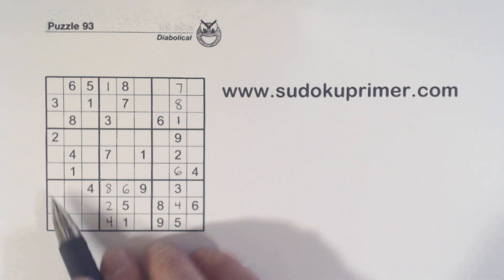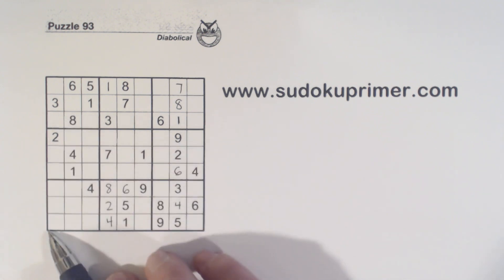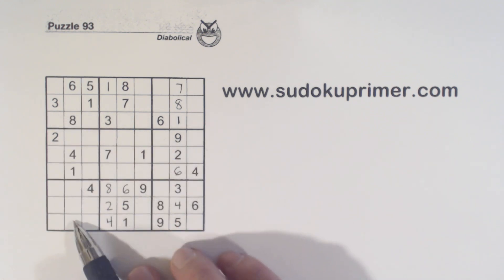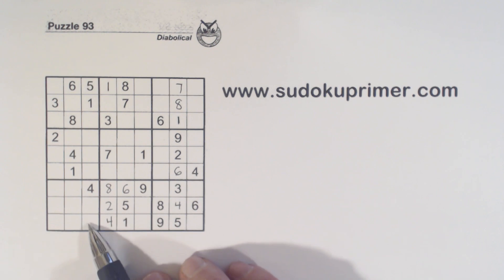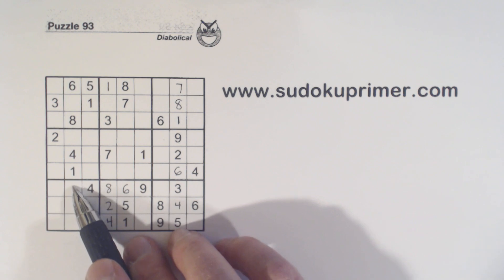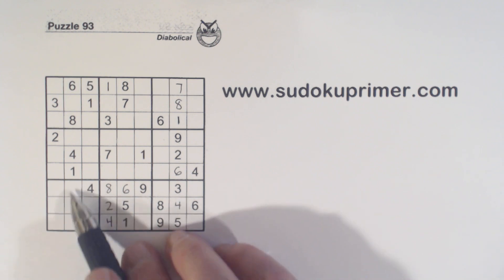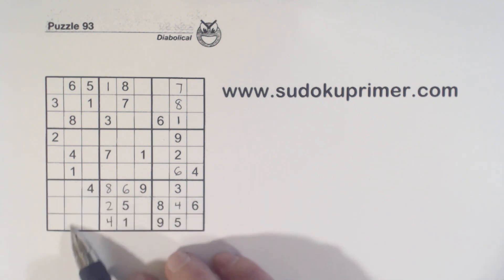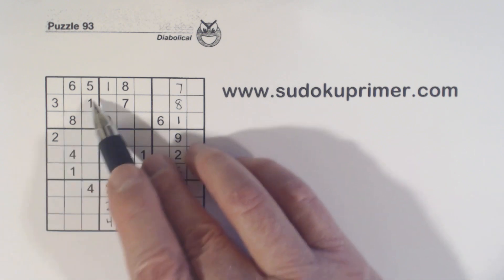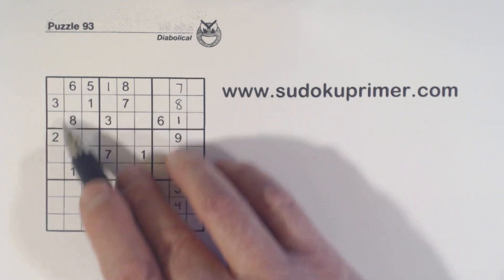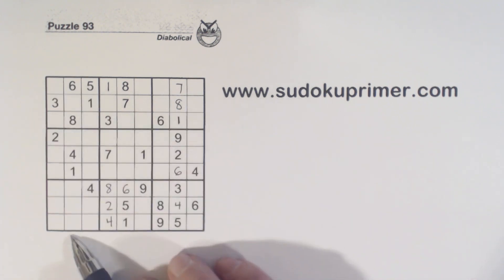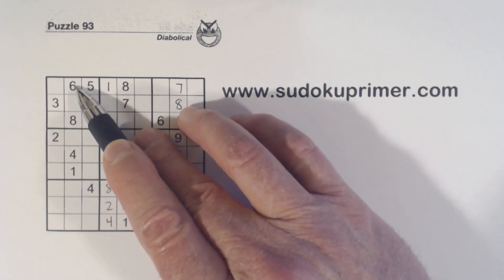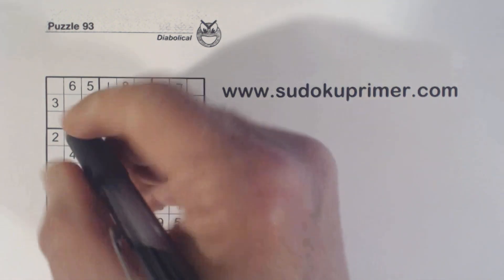Now with this two and this two, we know the two has to go here, here, or here. That can't be a two because it's a six or an eight, so that constrains the two to this column right here. And if we look at box one, we've got a two here and ghost twos there, so we know that's a two.